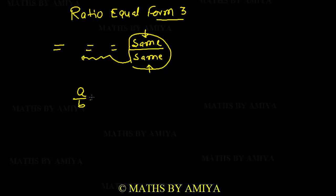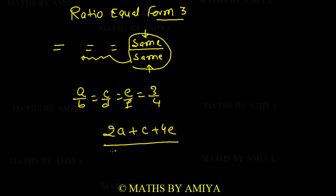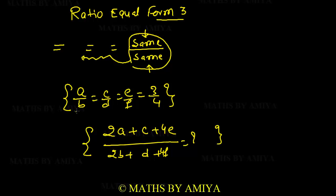If a/b = c/d = e/f = 3/4, then what is (2a+c+4e)/(2b+d+4f)? We see that 2a, 2b and c, d and 4e, 4f are corresponding values — the same change in numerator and denominator. So the ratio remains 3/4.